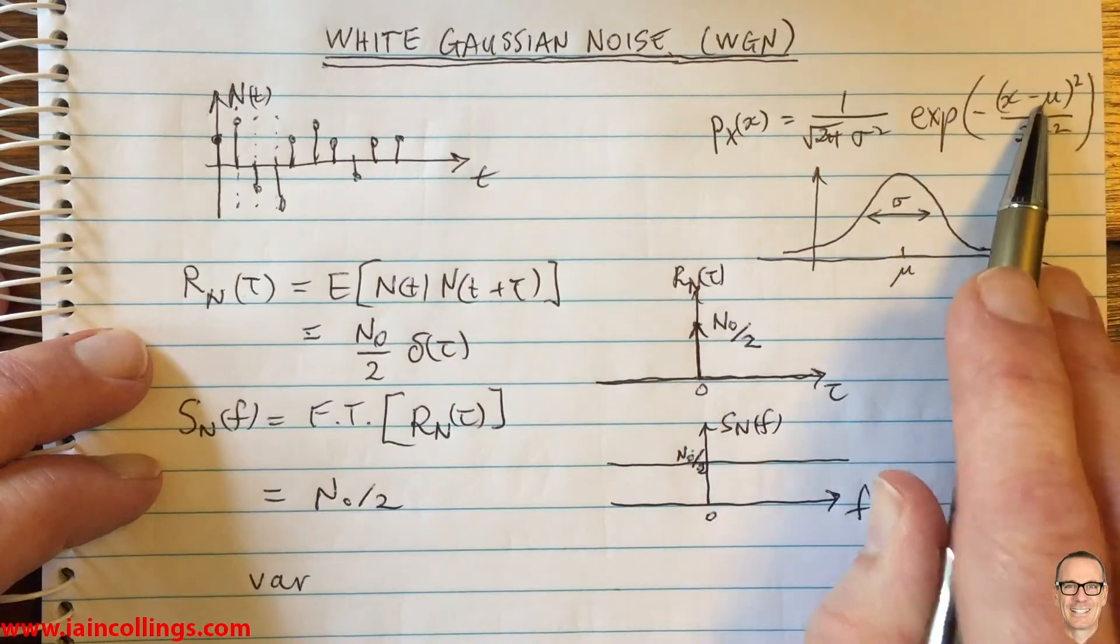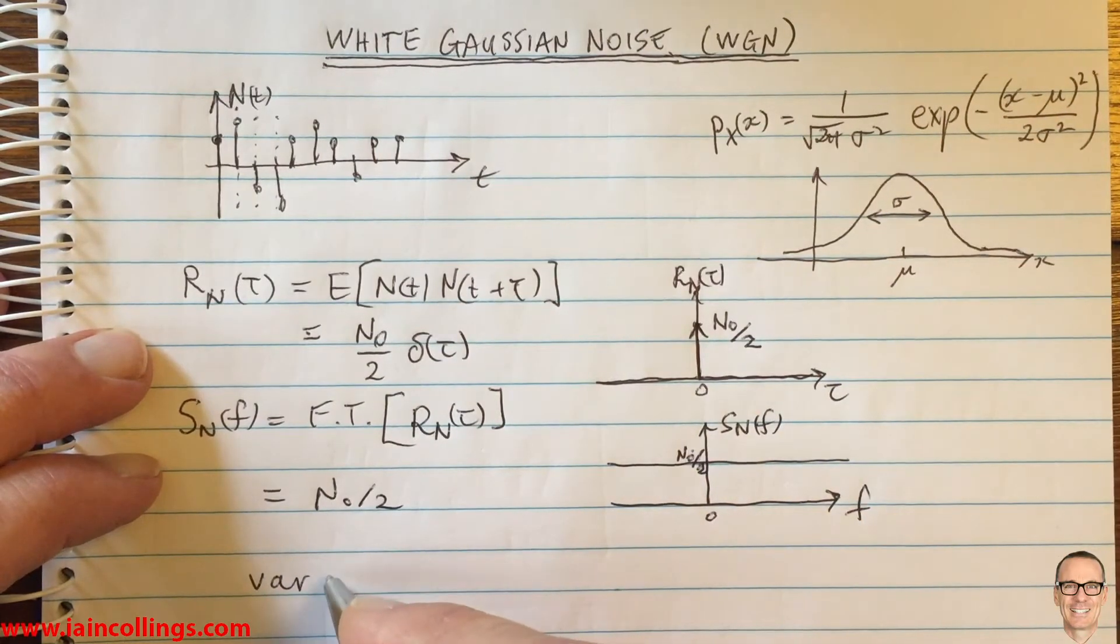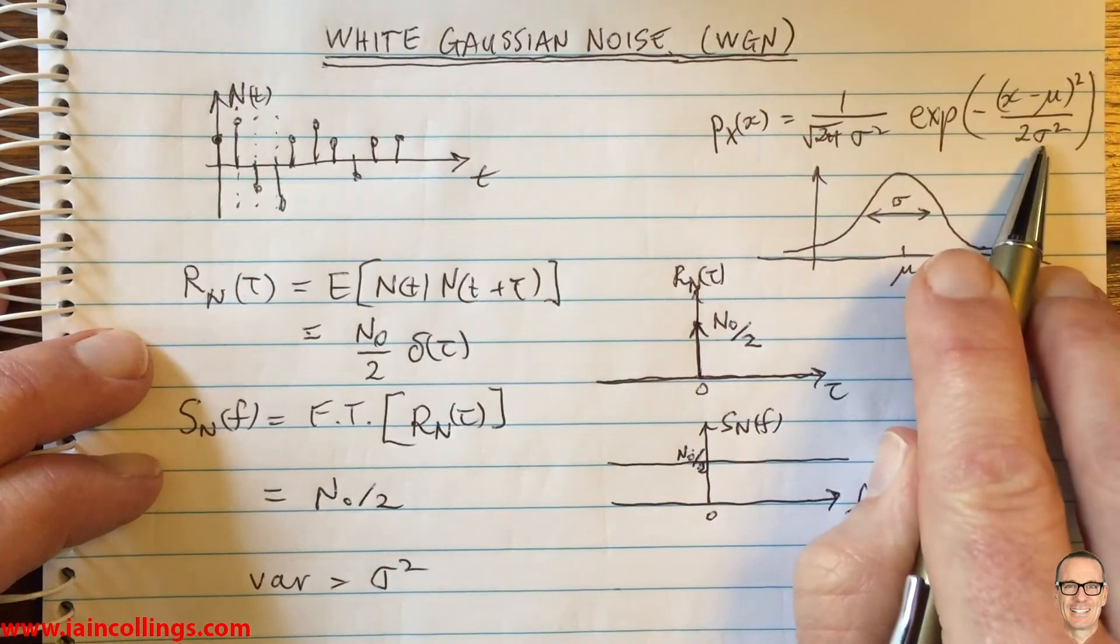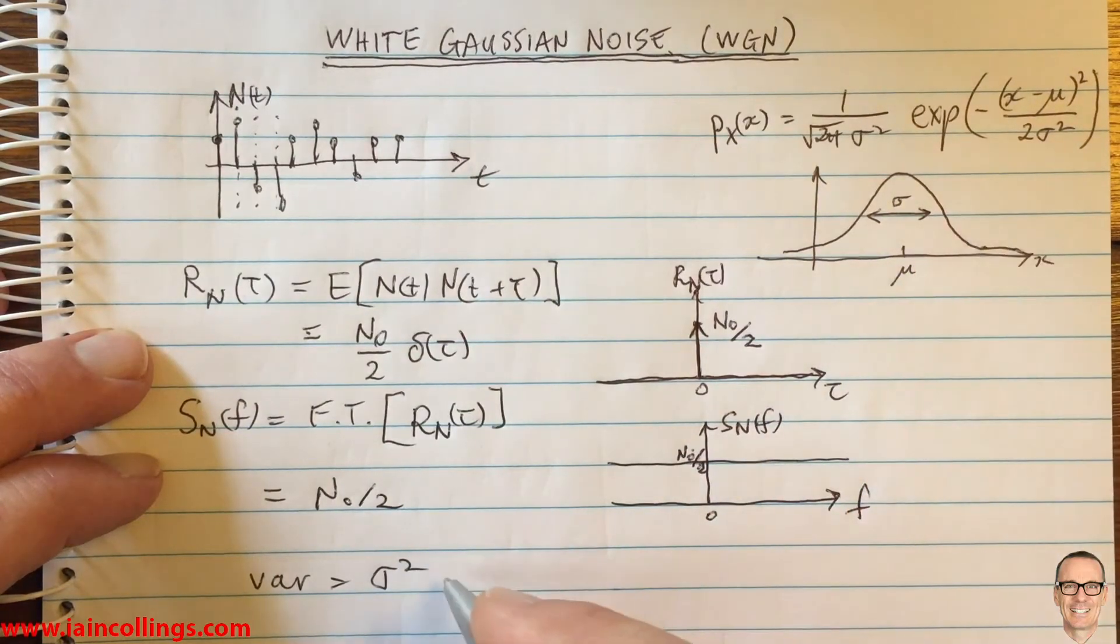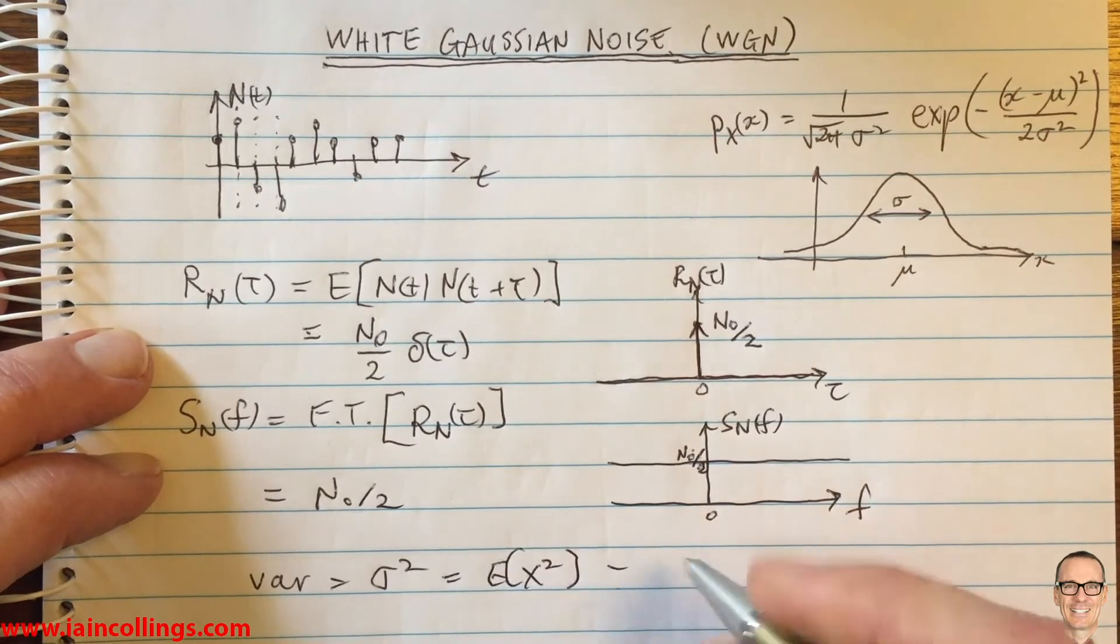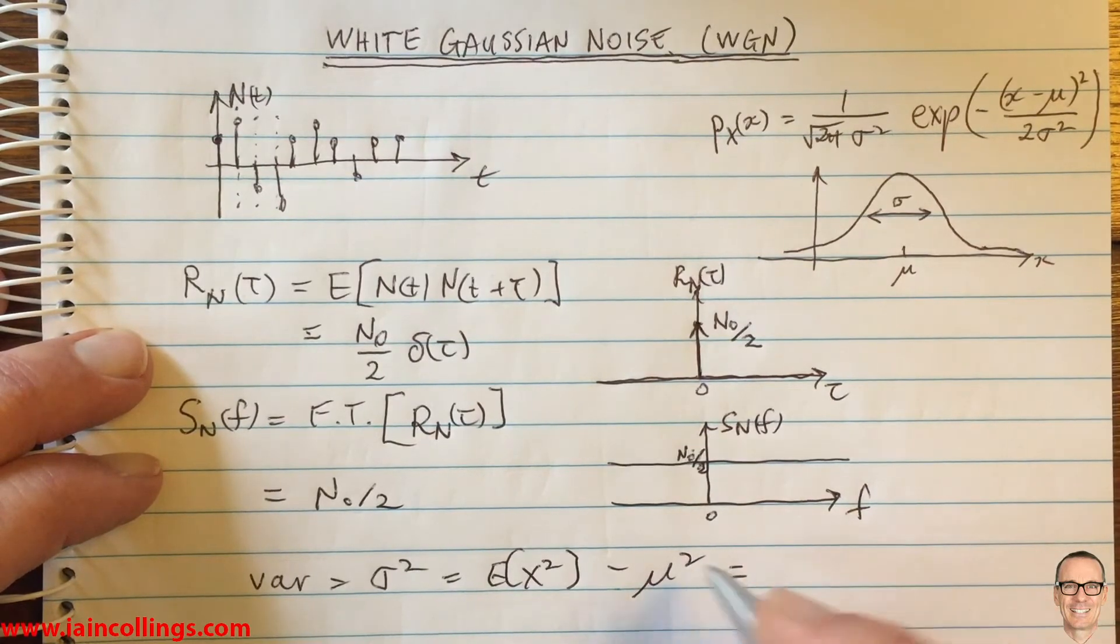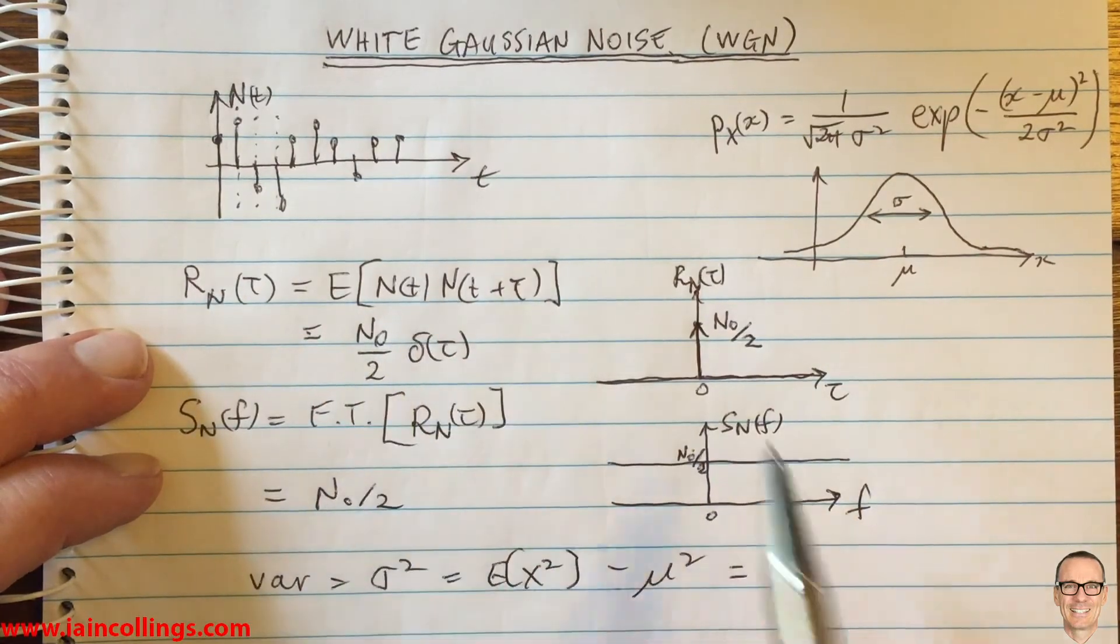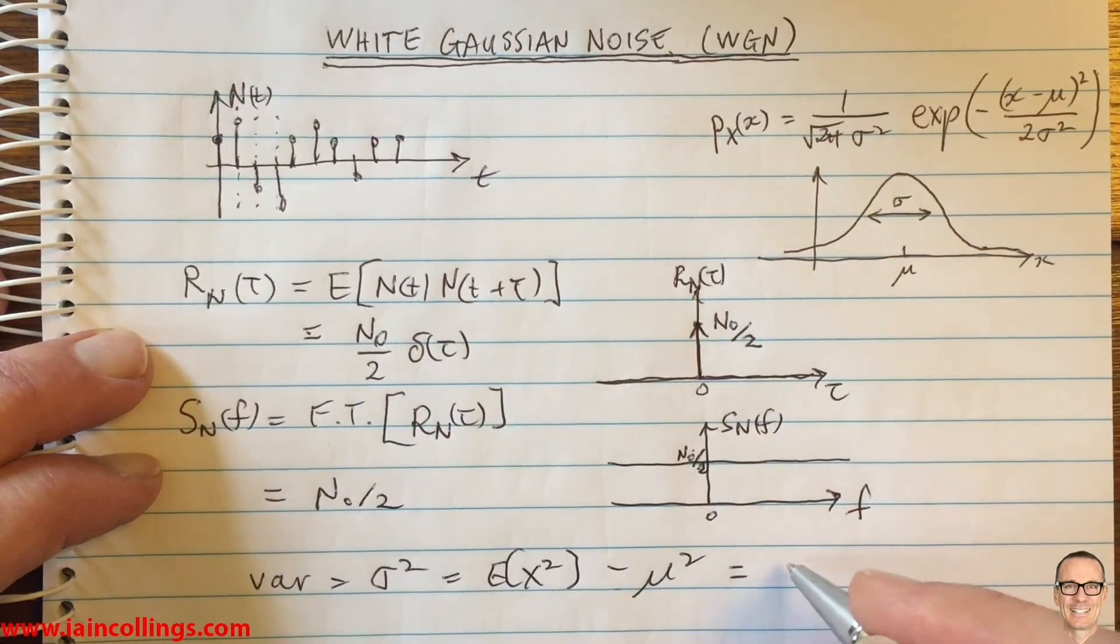When you use this equation for the Gaussian, sigma squared is the variance. This equals the second moment minus the square of the mean. Of course the mean equals zero, so this equals the second moment, which is the autocorrelation function with tau equals zero, which is N naught over two.